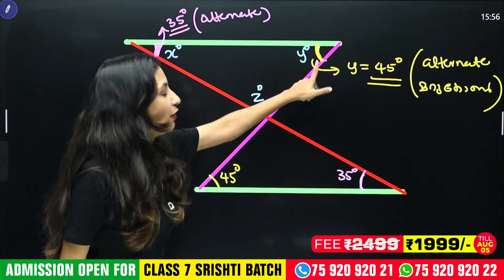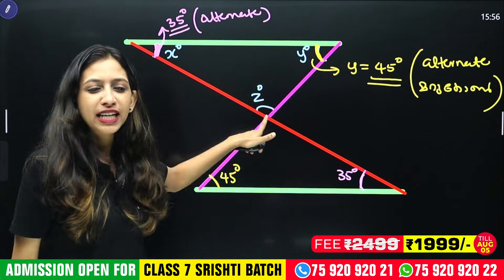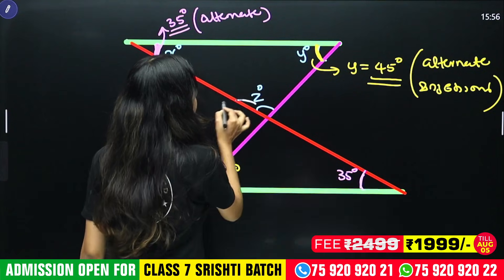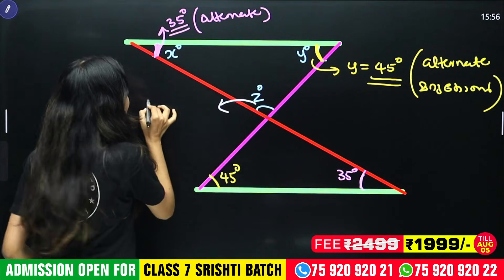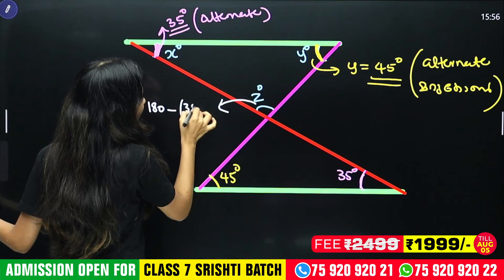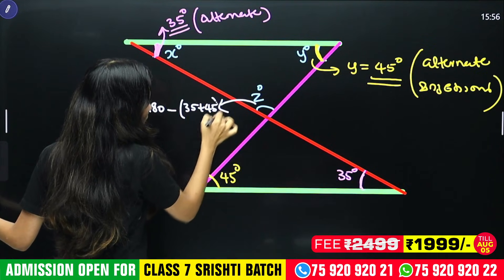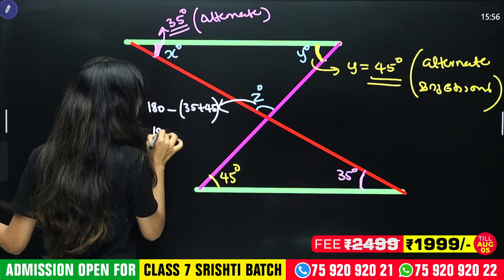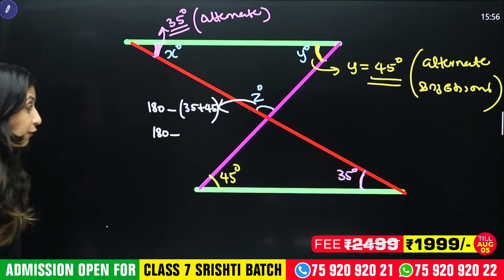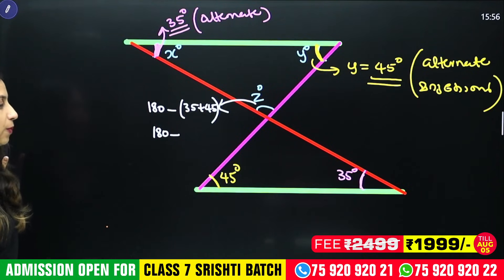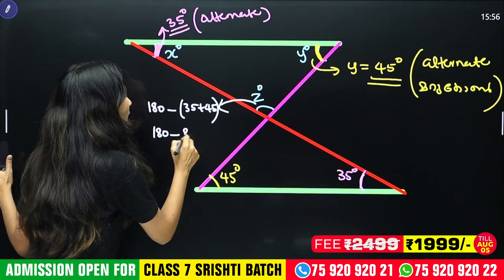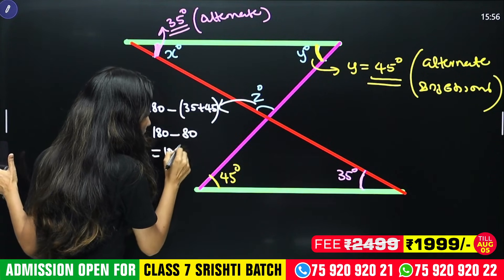Now, we have 35 and we have 45. This is easy. In 180 degrees, we need to add 35 and 45. If you add 35 and 45, it equals 80. Because if you add 35 and 45, the total is 80. So you have to add 35 and 45.